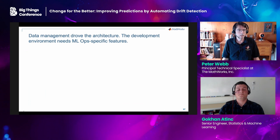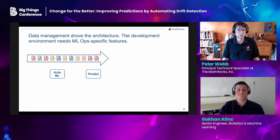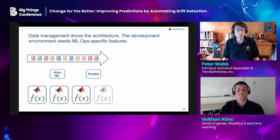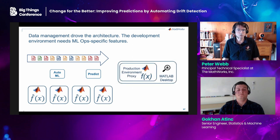Now that you've seen the overall architecture, I want to focus on how we transform that diagram into a practical system. I'll highlight three challenges that drove the architecture, then identify the characteristics of a development environment suitable for building an automated machine learning solution. Our biggest challenges were data order and frame size, machine learning model distribution, and horizontal scaling. Our must-have development environment features are a virtual production environment, native access to streaming data, and deployable physical models.